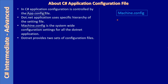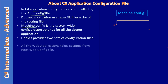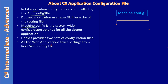.NET provides two sets of configuration files. Machine.config is the root, and from there it divides into two routes. All web applications take settings from the root.web.config file. For example, if a Windows Server 2016 is hosting six or seven web applications under IIS, root.web.config provides settings common to all those websites.